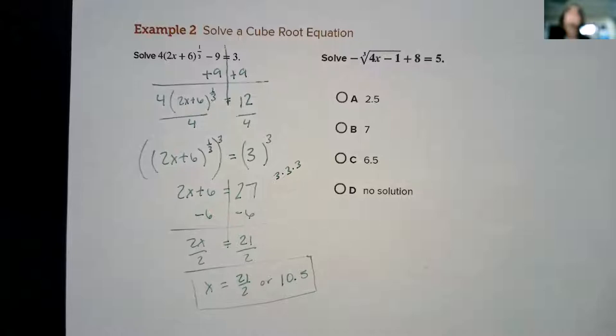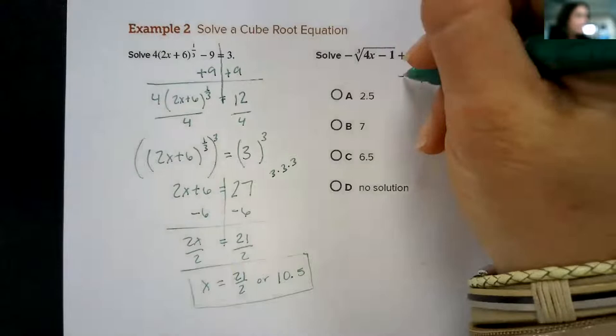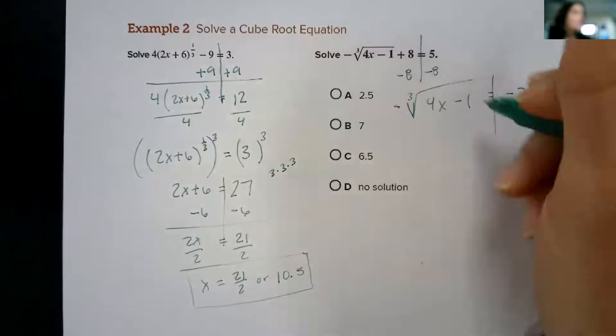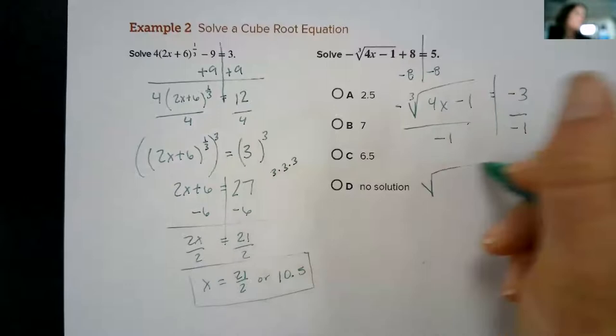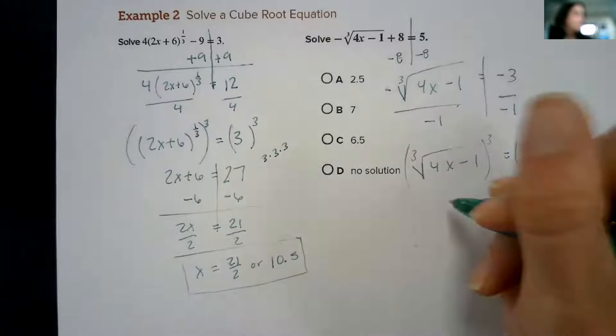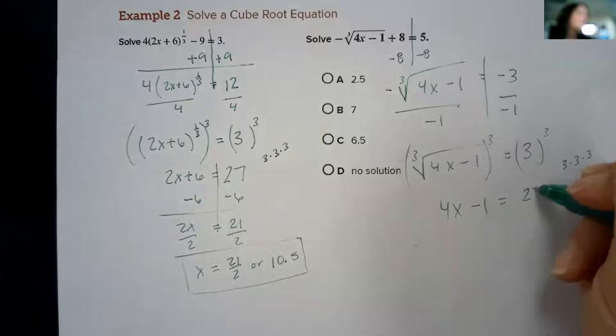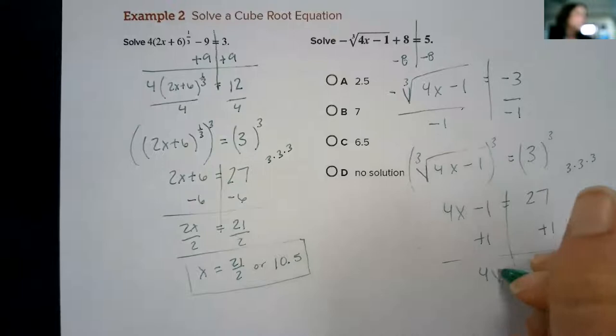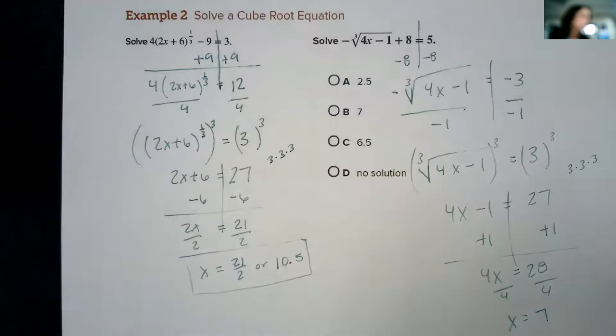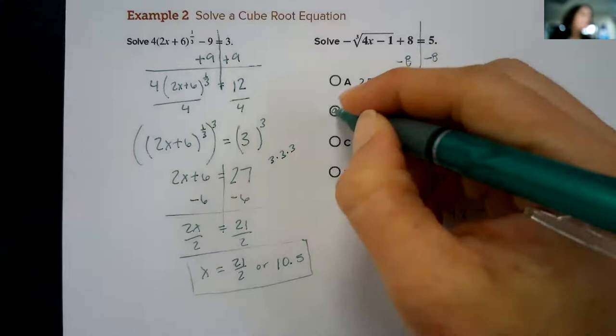Another example. This one I'd start by subtracting 8. Drop this down, I have negative the cube root of (4x - 1) equals negative 3. I have this negative out front, so to get rid of it I'm going to divide both sides by negative 1. That's cube root of (4x - 1) equals positive 3. Cube each side. Give me 4x minus 1 equals, again this is 3 times 3 times 3, that's 27. Add 1, that's 4x equals 28. Divide by 4, x would be 7. Don't need to check for extraneous solutions when it's underneath the cube root. Cube roots will be just fine. You can get a negative underneath the cube root, it's not a big deal.